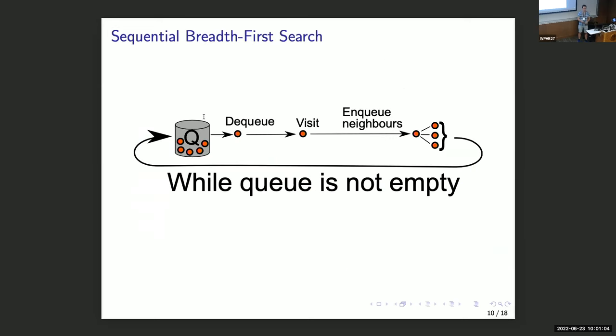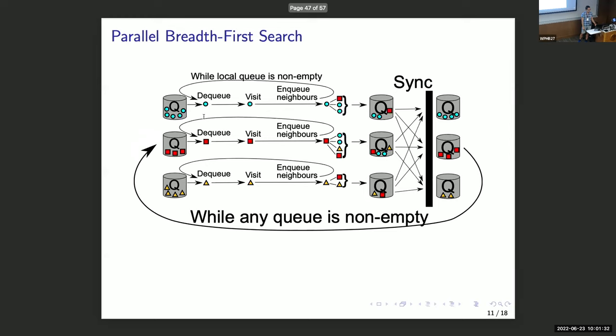So we're going to parallelize this graph search. Let's start with sequentially again. We look at breadth-first search. How do you do that? Well, you have a queue, which at the beginning you put the root vertex in, and successively you dequeue a vertex, you visit it and enqueue the neighbors and continue like that until you visited all your vertices.